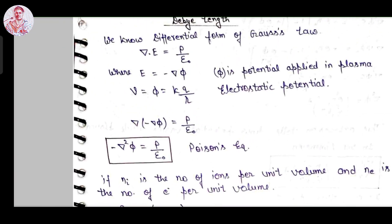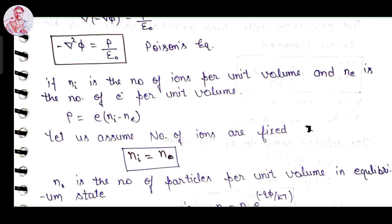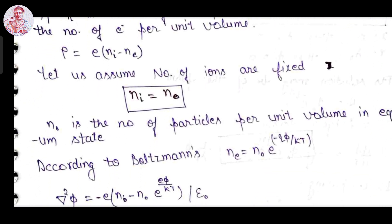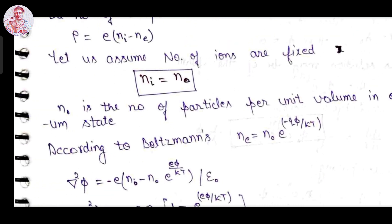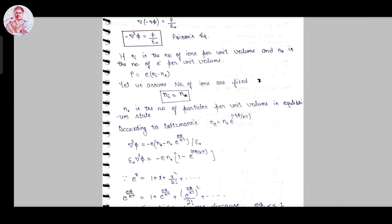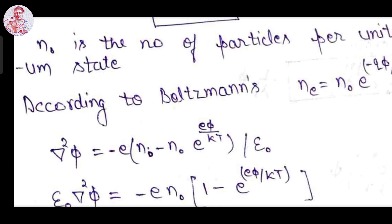Now, if nᵢ is the number of ions per unit volume and nₑ is the number of electrons per unit volume, then ρ becomes e(nᵢ − nₑ). Let us assume the number of ions is fixed, meaning nᵢ = n₀, where n₀ is the number of particles per unit volume at the initial or equilibrium state. According to the Boltzmann law, nₑ = n₀ · exp(−eφ/kT). Now we substitute the value of ρ into the Poisson equation, and we get ∇²φ = −(e/ε₀)(n₀ − n₀ · exp(eφ/kT)).